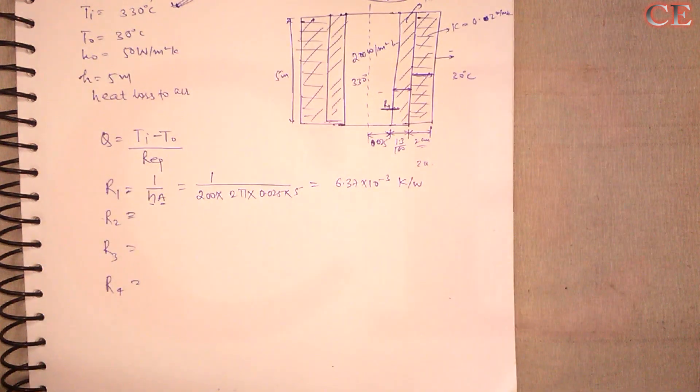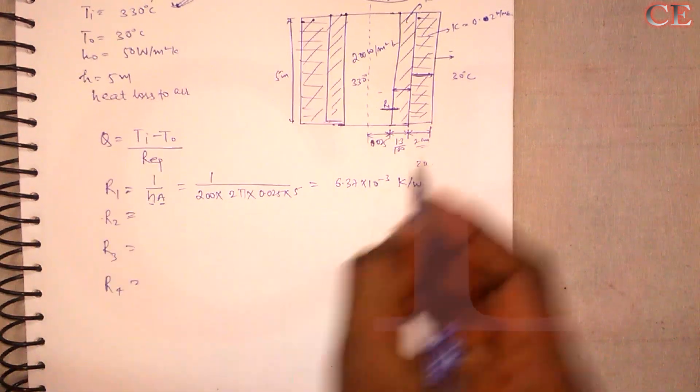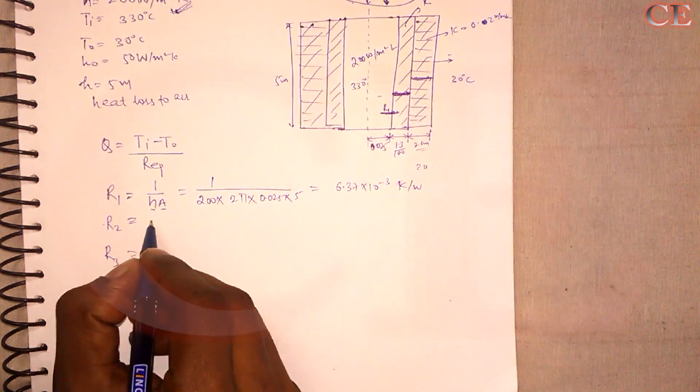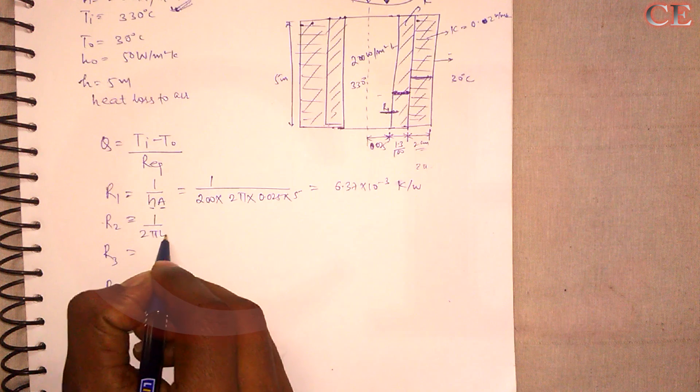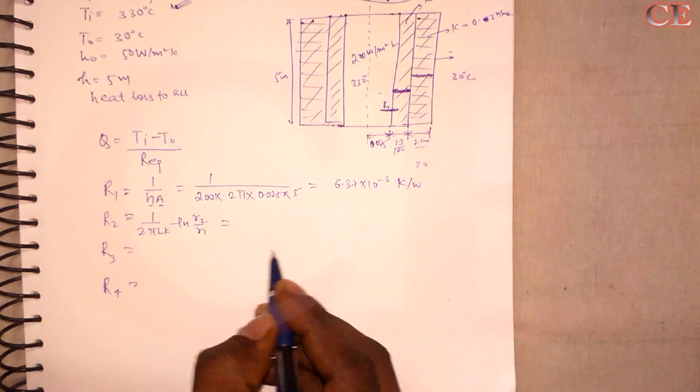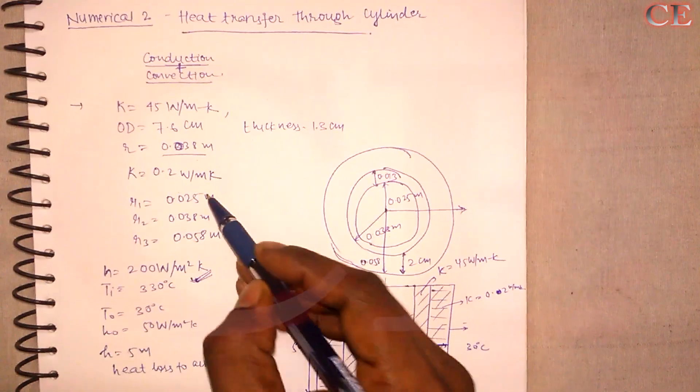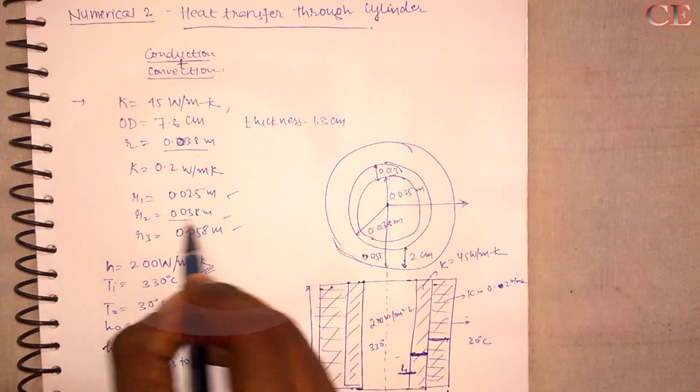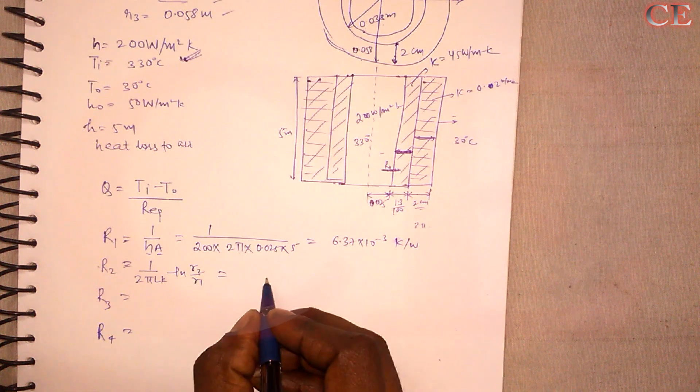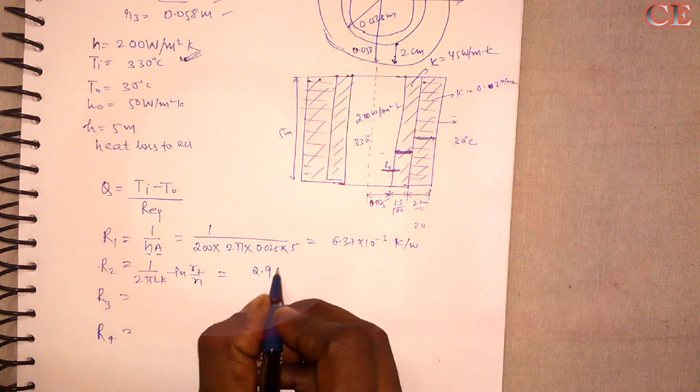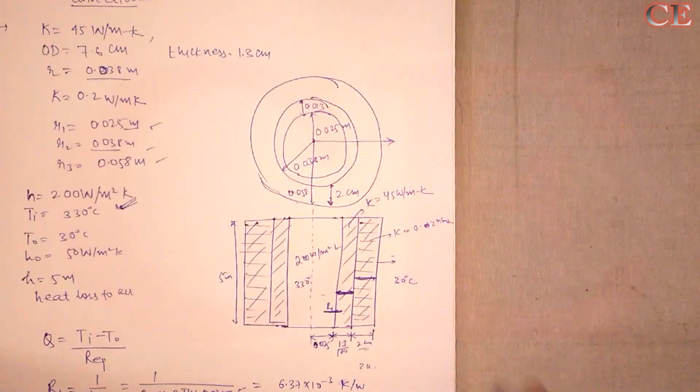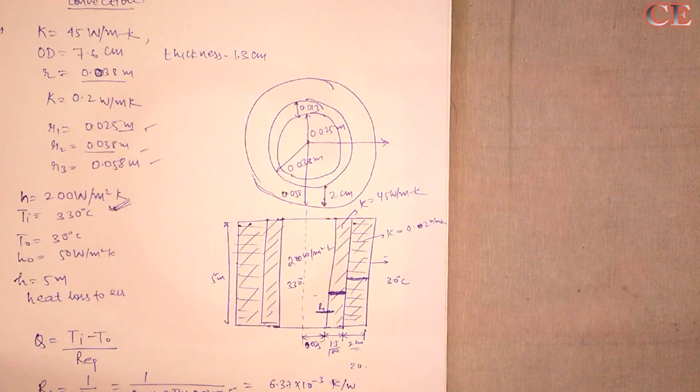Now further moving on. What would the R2. So R2 would be due to conduction from the surface this metal surface. So it would be equal to 1 upon 2 pi Lk ln R2 upon R1. So putting the values we have R1, R2, R3. So here R2 upon R1. Now after putting these values we will obtain R2 2.96 10 power minus 4. And here the value of K would be equal to 45 because K for the metal surface is 45 watt per meter Kelvin.